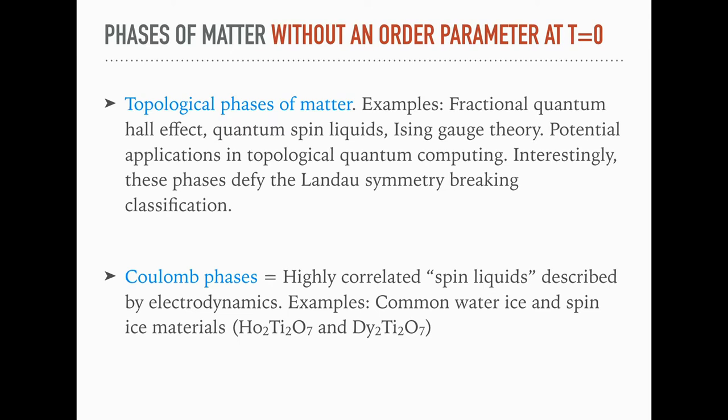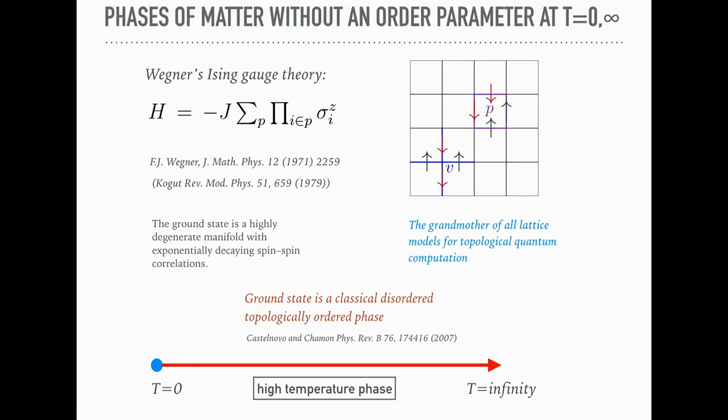It's this gauge theory from the 70s, Wegner's Ising gauge theory. It's a Hamiltonian that is very simple, it's classical. It's basically defined on the square lattice, but the spins live on the bonds of the lattice, and the Hamiltonian is just a product over the four spins on the plaquettes. The interesting thing is that the ground state at zero temperature, there's no order. The spin correlations decay exponentially fast, the same way as they do at high temperature, at infinite temperature basically. This is the phase diagram of the system, so there's a constrained ground state, classically disordered, and there's topological order as shown in this paper by Claudio Chamon and Claudio Castelnovo. Then there's the high temperature phase, which happens right at any temperature.